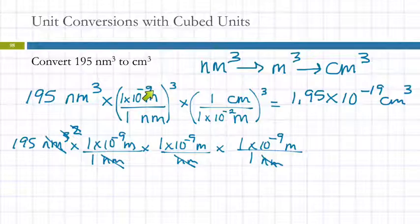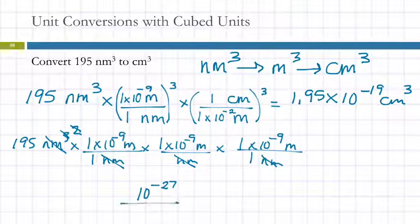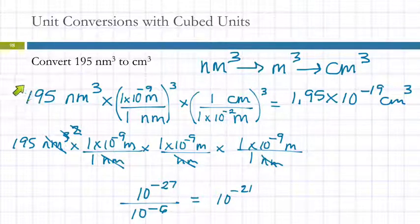So 10 to the minus 9, if we cube that, that's going to be 10 to the minus 27, because 3 times 9 is 27. And that's going to be divided by 10 to the minus 2 cubed, which is 10 to the minus 6, 2 times 3. And so that's going to give me negative 27 minus negative 6, 10 to the minus 21, and that's 195. The decimal point is going over two places, and so yeah, I did that right.